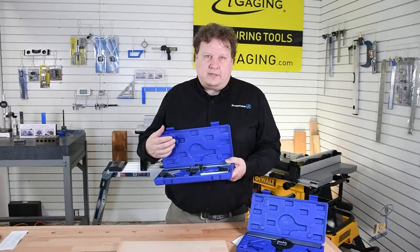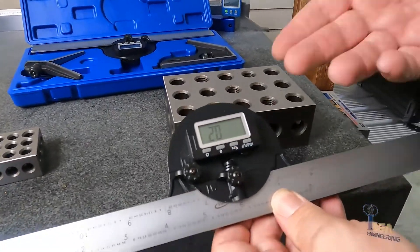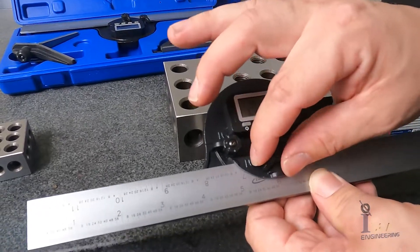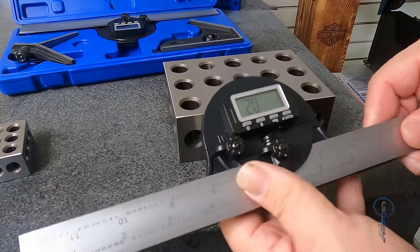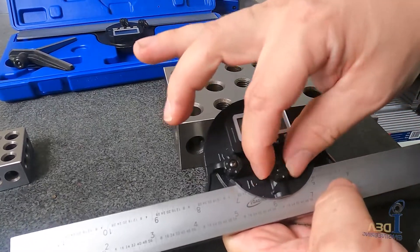Let's go over all the features of this new iGaging tool. So let's take a closer look at the digital protractor here. This is when you put the blade in, when you want to tighten it down, this is how you tighten it.